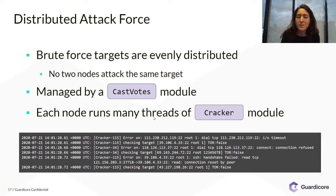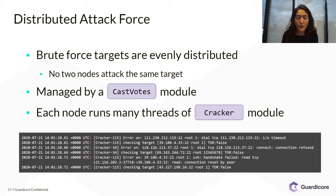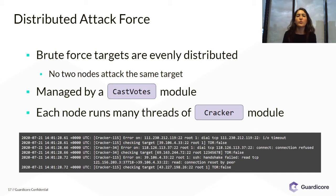We suspect that the module responsible for this smart management is the cast votes module. This module maintains a voting system where eventually it reaches a consensus about a winner node in the P2P network. This winner node becomes responsible for target distribution — it tells each node which targets to attack.